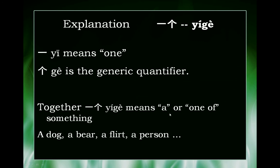So together, 一个 means 'a' or 'one of something' — like a dog, a bear, a flirt, a person, etc.